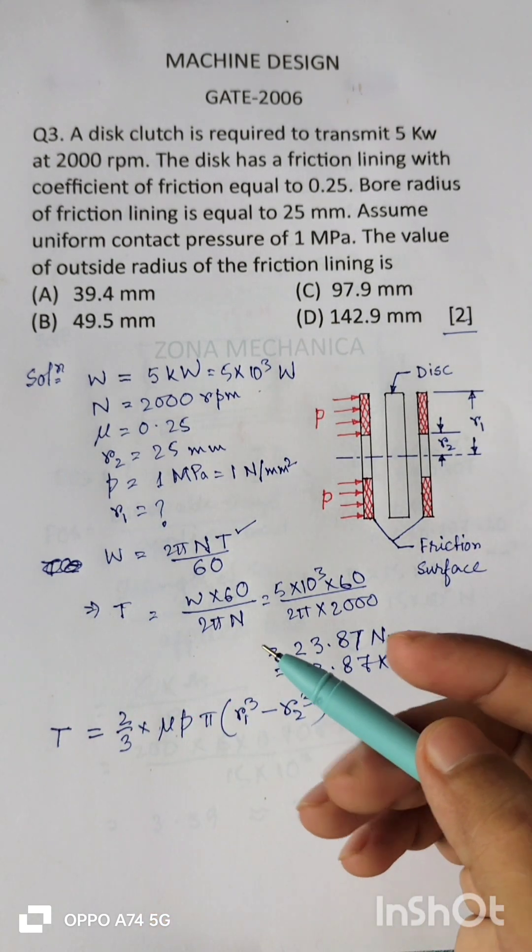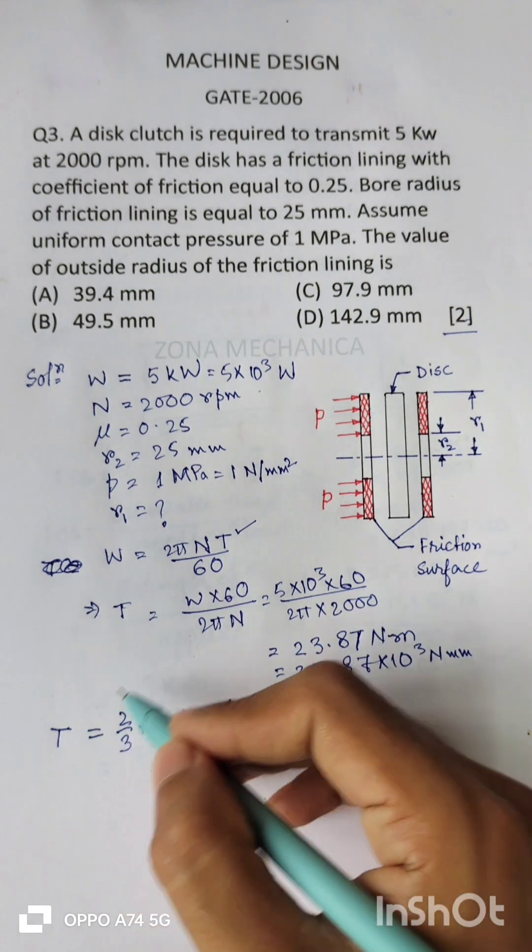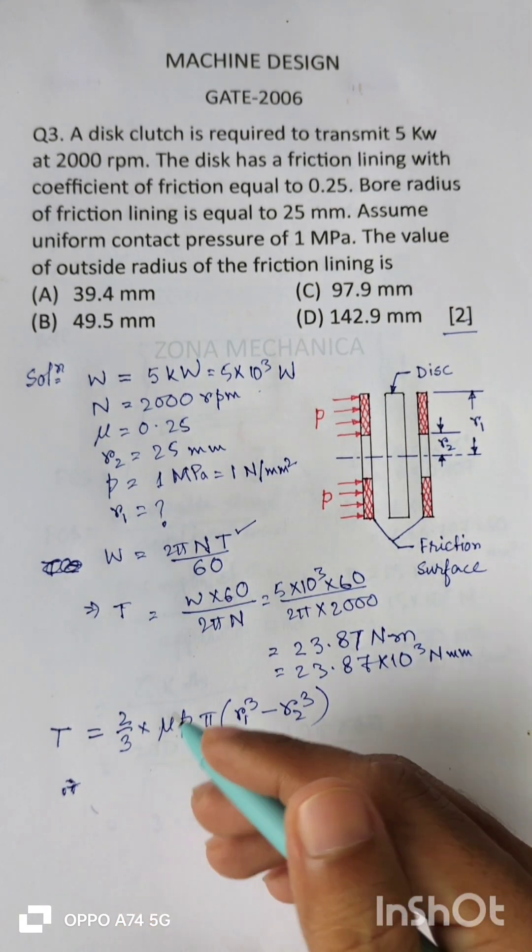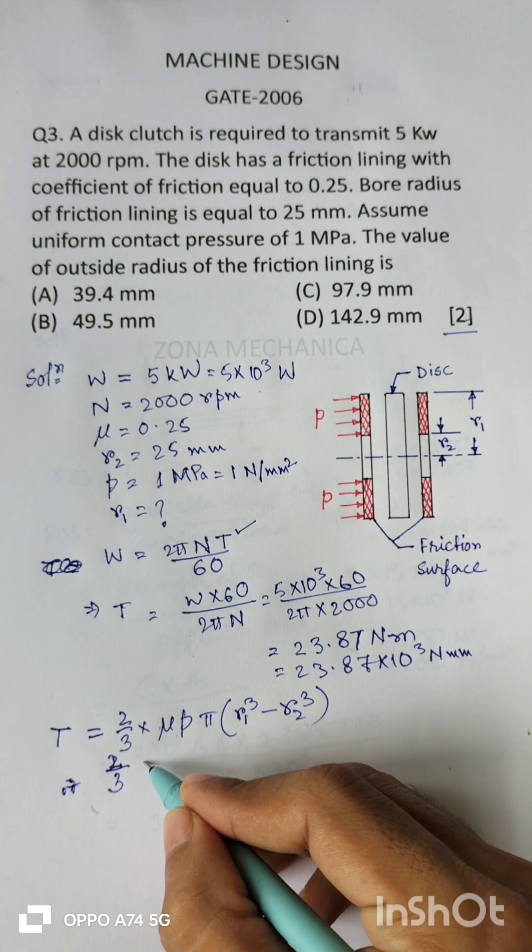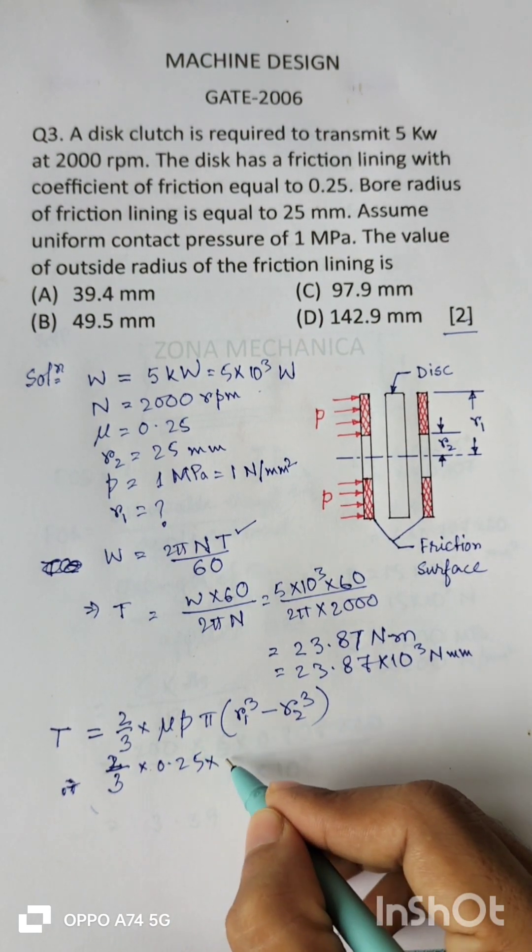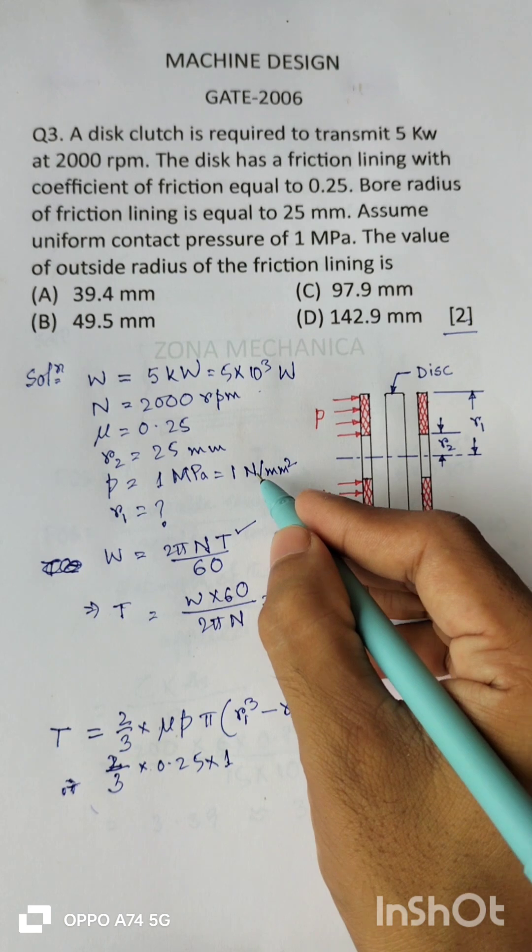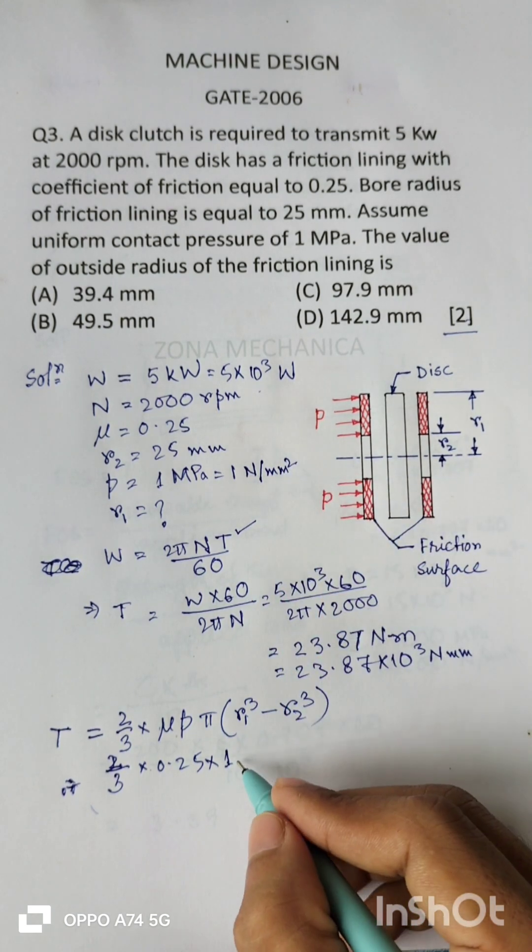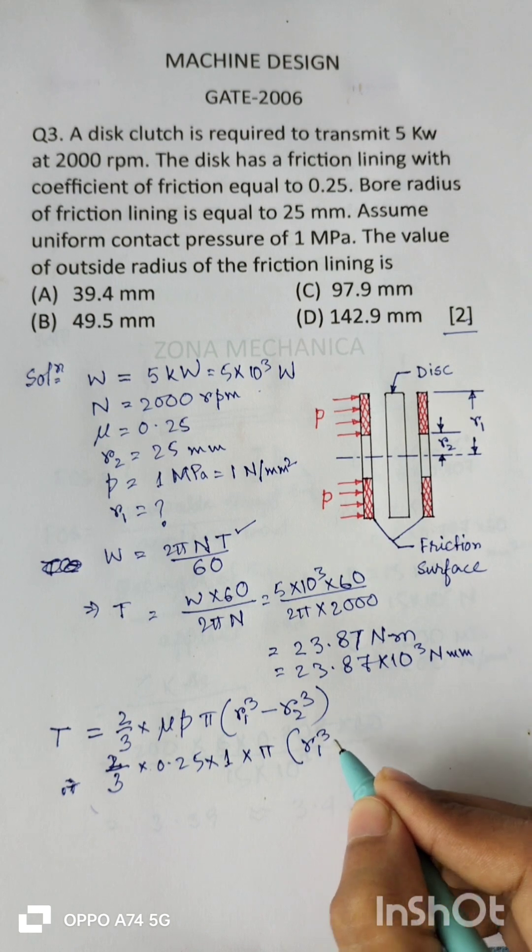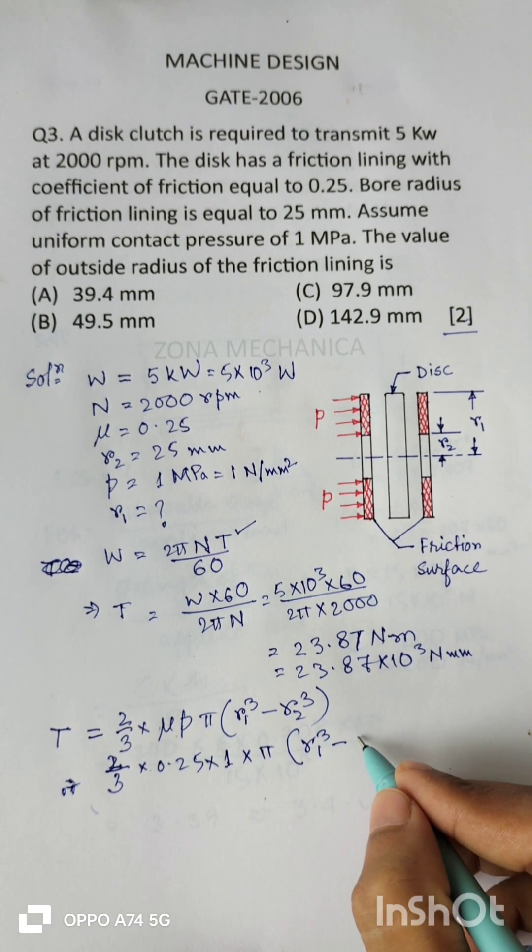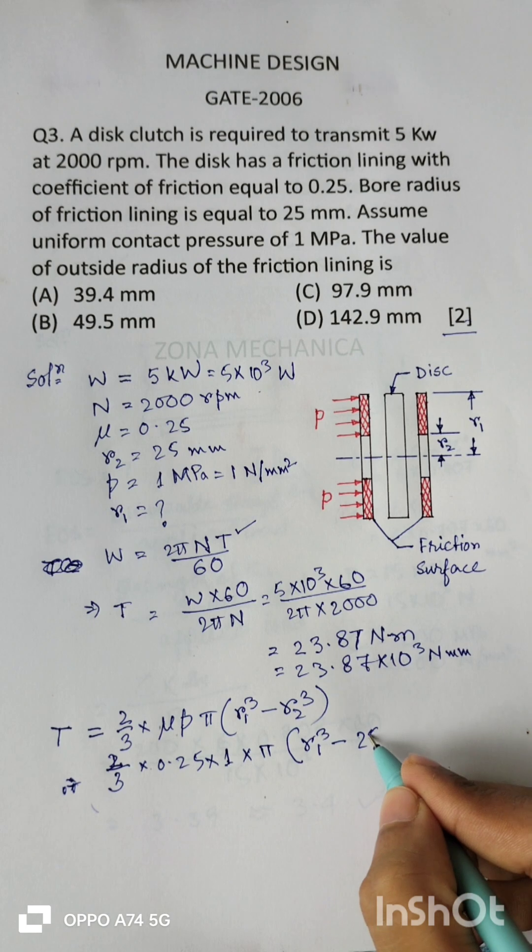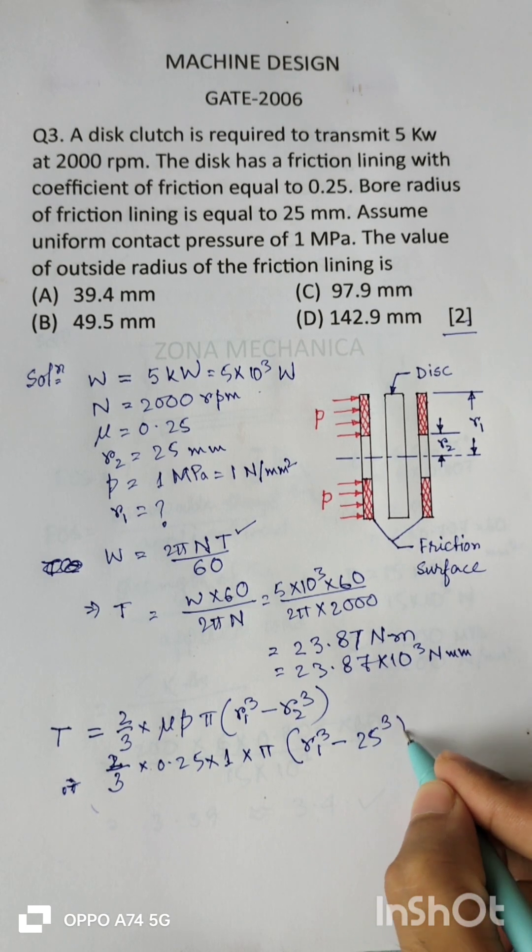So from these two we can write down 2/3 into 0.25 into P—we are taking 1 in newton per square millimeters—into π into (R1 cube minus R2 cube). R2 is 25 mm, so we are taking in mm cube.